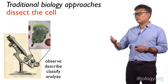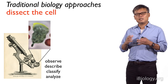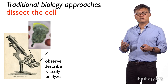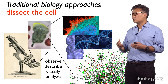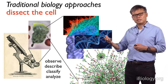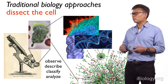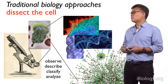Traditionally, the way that biology has attacked these problems is to take an interesting system like a cell and then try to dissect it — using things like a microscope or other tools to observe, describe, and classify what's going on. This could be using a microscope to look at structures in the cell, using genetics or genomics to look at DNA sequences and genes involved in a process, or structural methods to look at the structures of these molecules and network methods to look at how they're arranged in networks.